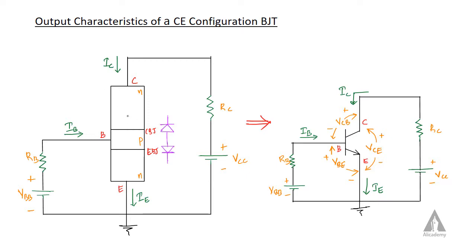We have the common emitter configuration, which means the emitter is common for both the input side and the output side. We have biasing voltages: VBB for biasing the emitter-base junction, and VCC for biasing the collector-base junction.